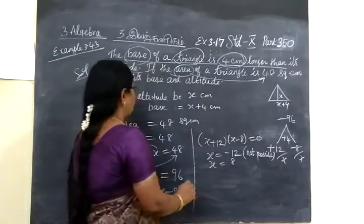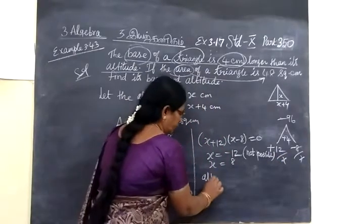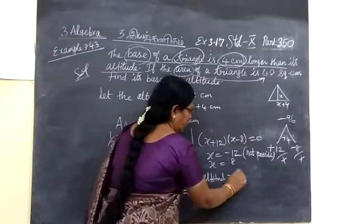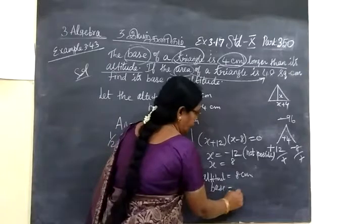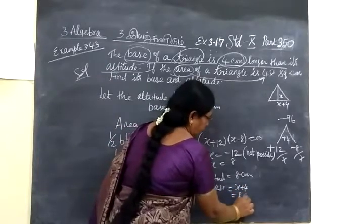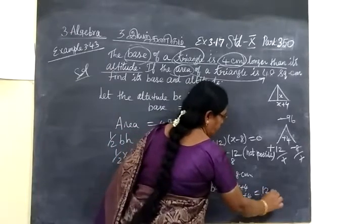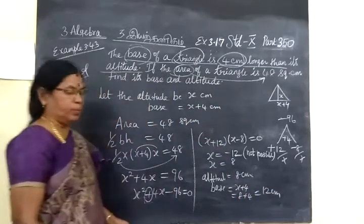Therefore, altitude equals 8 centimeters, and base equals x plus 4. That is 8 plus 4 equals 12 centimeters.